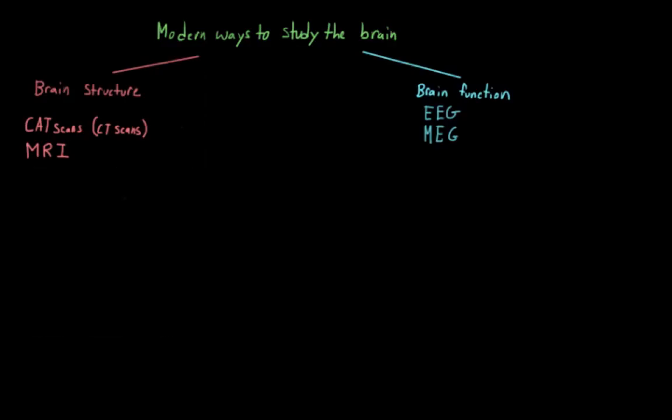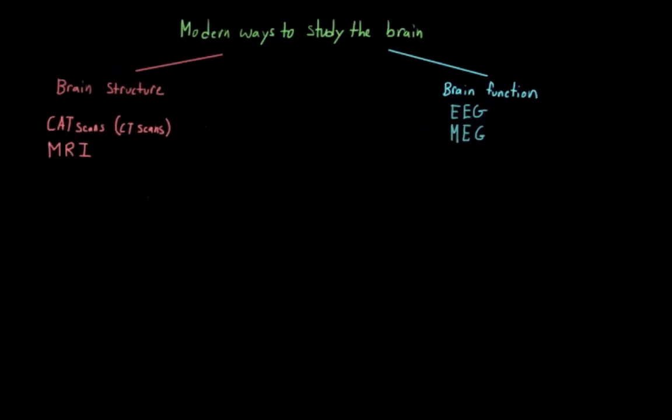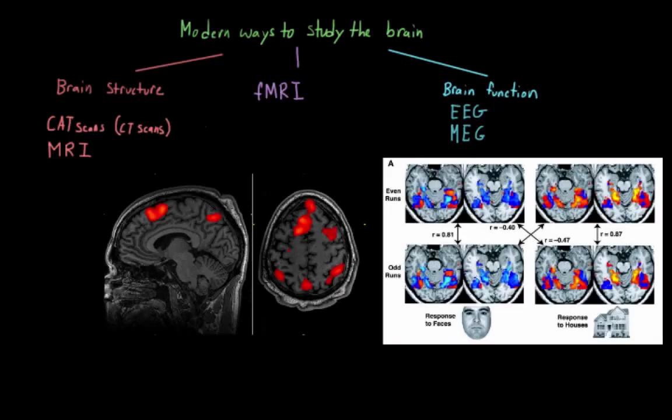We have structural imaging here and functional imaging here, and one thing that you might be thinking is, wouldn't it be great if we could combine them? And we can. The most popular and well-known of these combined methods is fMRI, which stands for functional magnetic resonance imaging. In this case, we have the same structural image from the MRI, but we can also look at which of these structures are active.